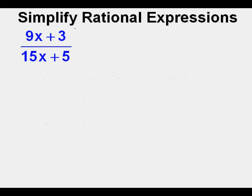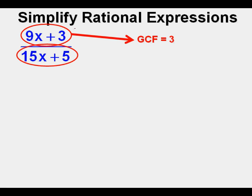The first problem we'll look to simplify is 9x plus 3 over 15x plus 5. What is the greatest common factor of the numerator, 9x plus 3? The greatest common factor is 3. And what is the greatest common factor of the denominator, 15x plus 5? The greatest common factor is 5.